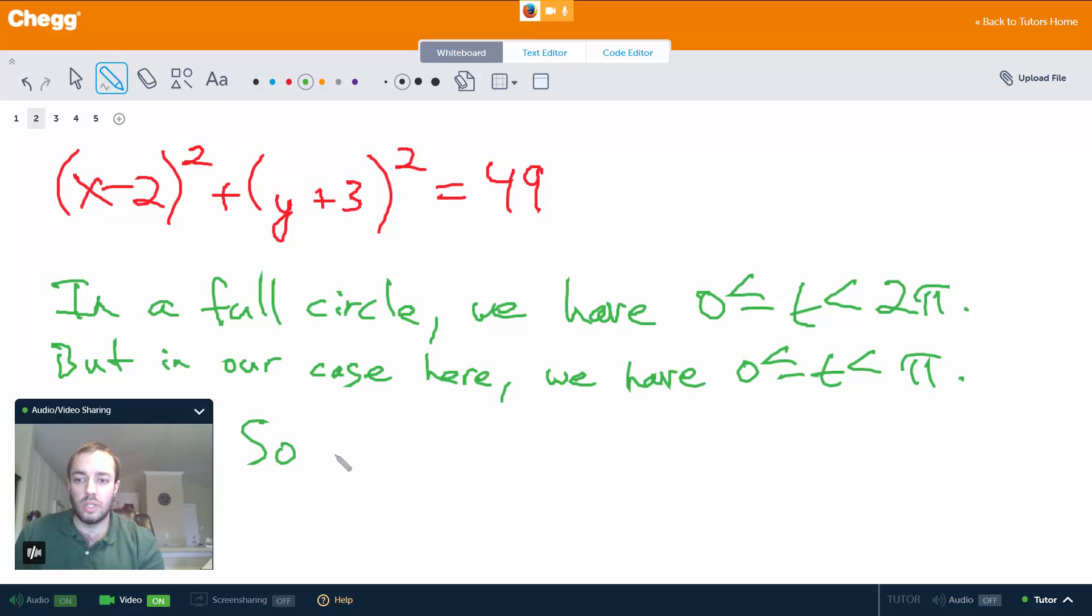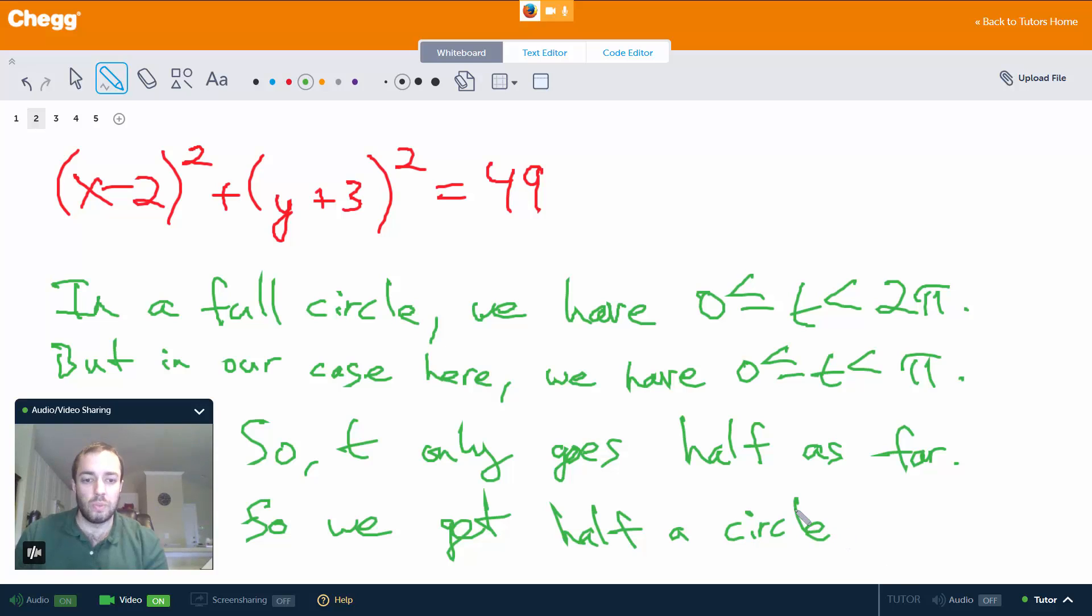So t only goes half as far. t only goes half as far as it does if we have a full circle. So that means we get half a circle.